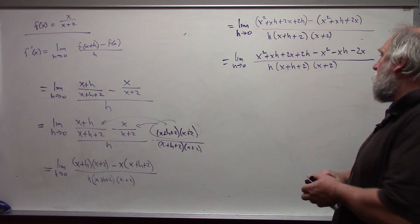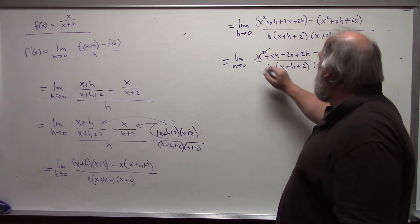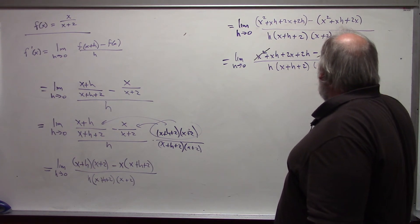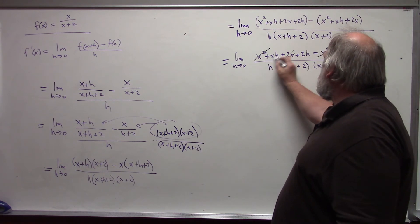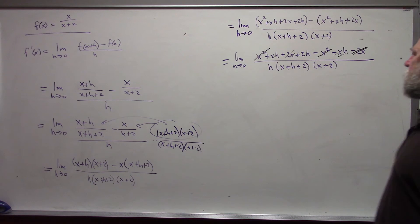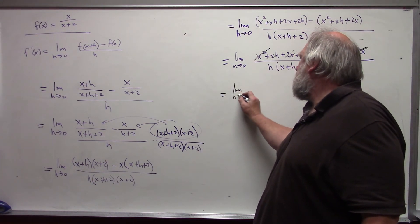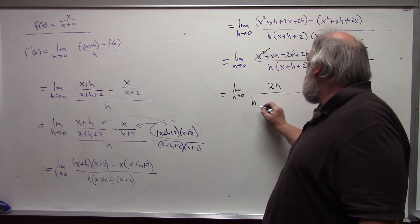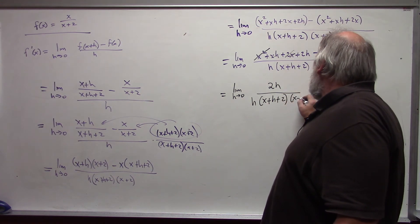A bunch of stuff at this point cancels out. Anything that doesn't have an h should cancel out. x squareds and the two x's will cancel out also. And in this case, the xh's will also cancel out. So all I am left with is 2h over h times x plus h plus 2 times x plus 2.